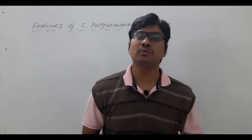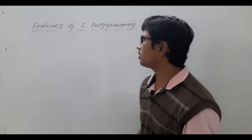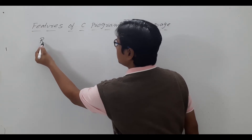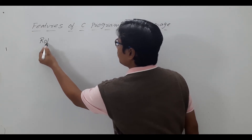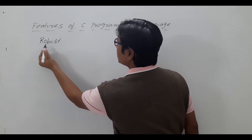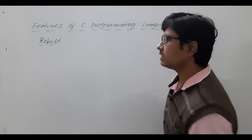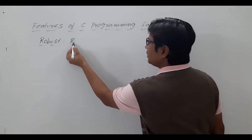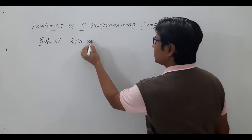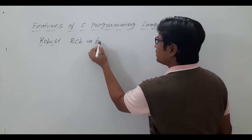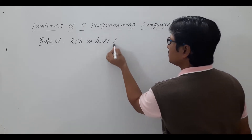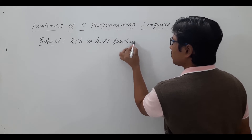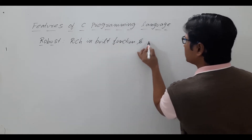First let me discuss what are the features of C programming language. The first one is robust in nature. The meaning of robust is that it has rich inbuilt functions and operators.